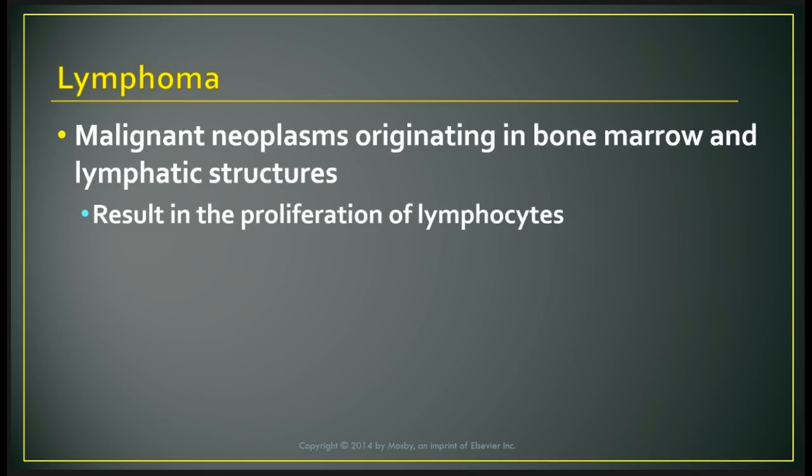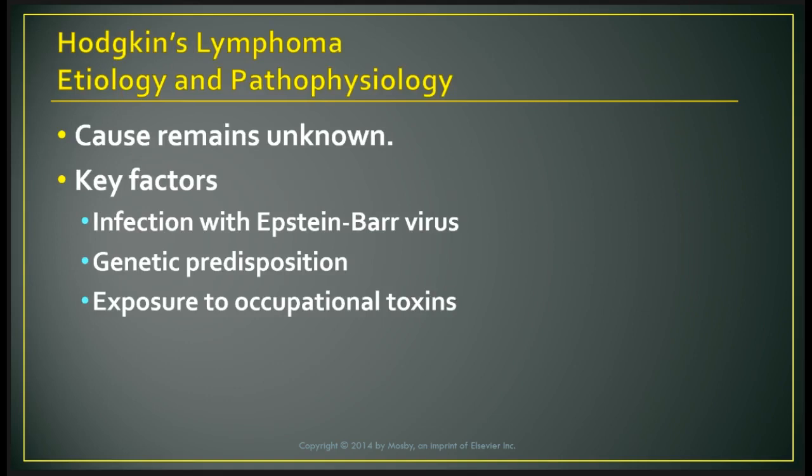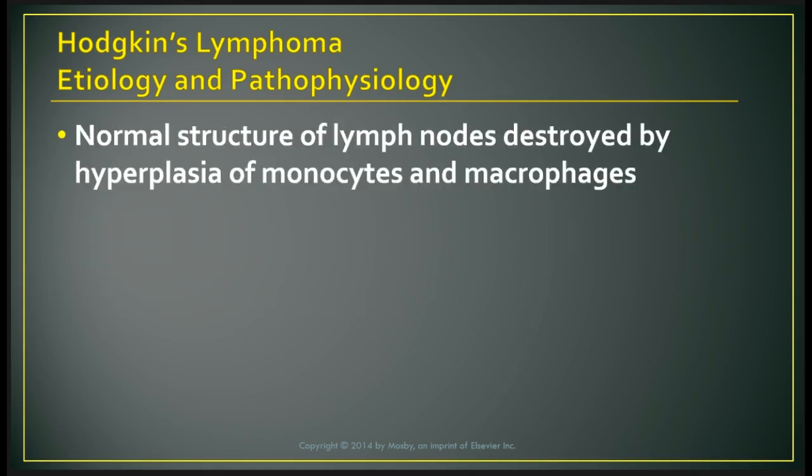The incidence of Hodgkin's lymphoma is increased among those who have HIV. Causes remain unknown, but key risk factors include Epstein-Barr virus infection, genetic predisposition, and occupational toxin exposure. Hodgkin's disease develops in a single lymph node or chain of nodes, which then spreads to adjoining nodes.